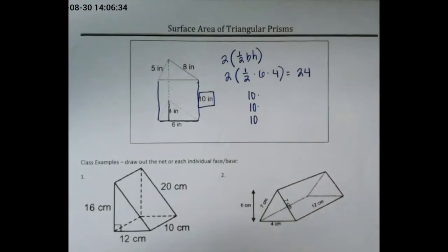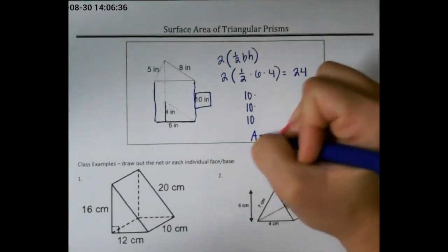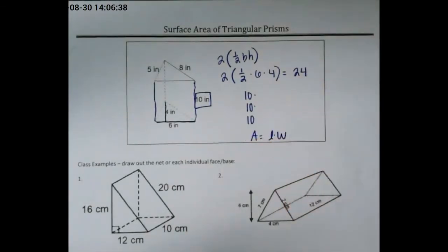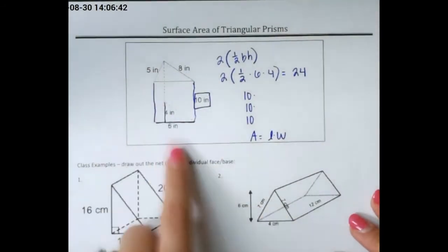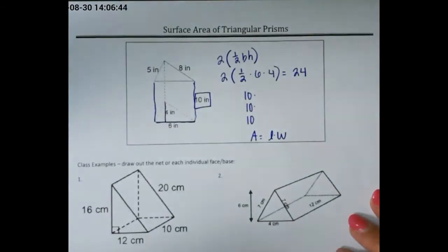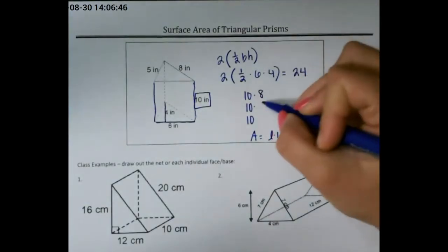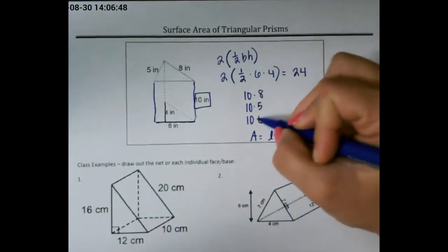So I need the width, because I know that area of a rectangle is length times width. So the trick here is that you're going to use the three sides of your triangle for the width of each rectangle, so 10 times 8, 10 times 5, and 10 times 6.